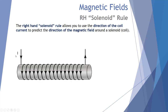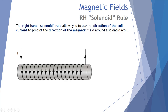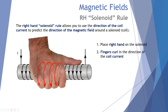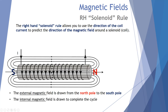For the opposite current direction, place the right hand so fingers start at the top and wrap down — again the thumb gives the north pole. External magnetic field goes from north to south; internally the field continues that cycle right through the solenoid. That's the right hand solenoid rule.